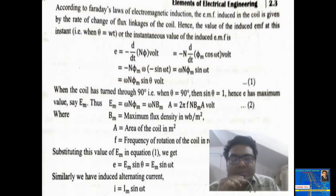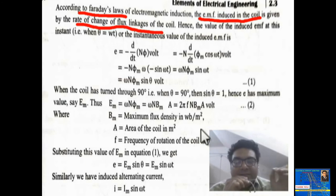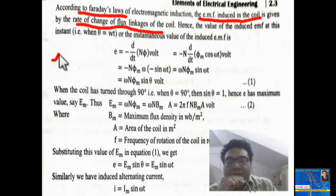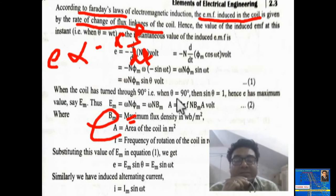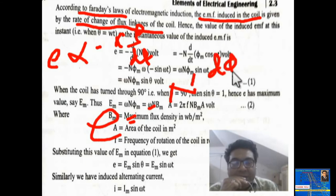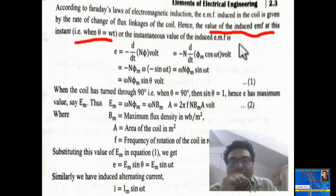Now we will see the expression for induced EMF. According to Faraday's law of electromagnetic induction, the EMF induced in the coil is given by the rate of change of flux linkage: e = −N dΦ/dt. Here, e is directly proportional to −dΦ/dt, which is the rate of change of flux. With N number of turns, e = −N dΦ/dt. The instantaneous value of induced EMF at any instant is given with θ = ωt.